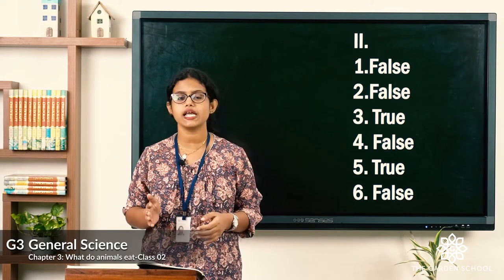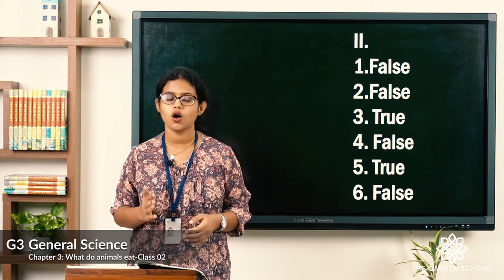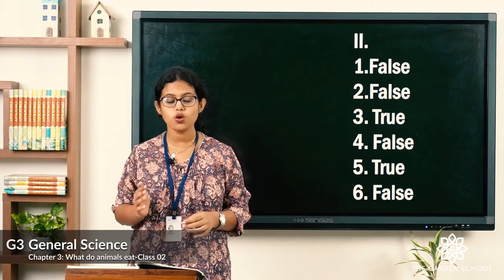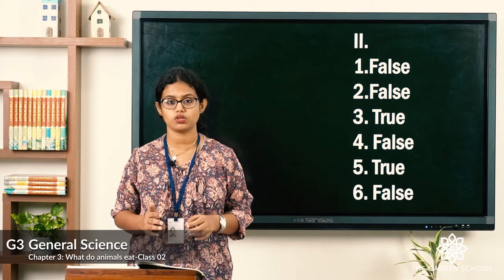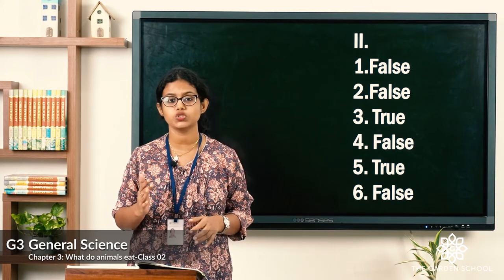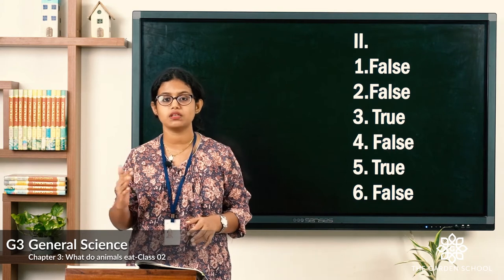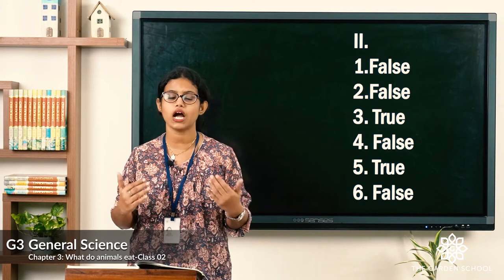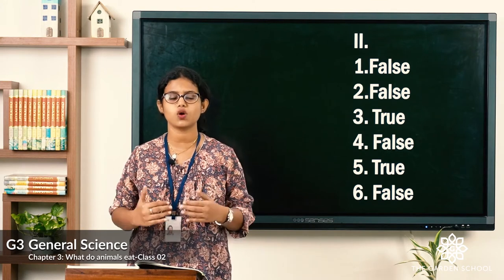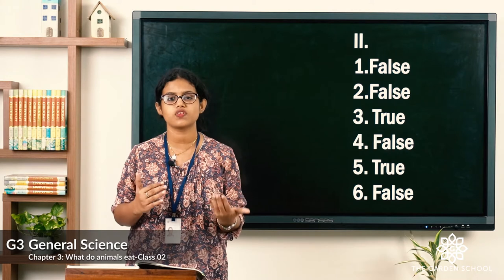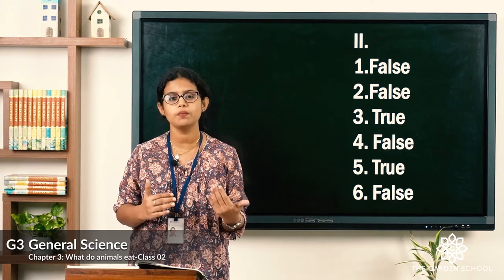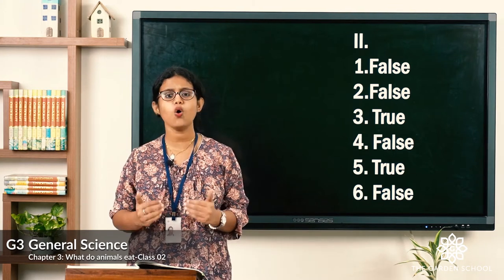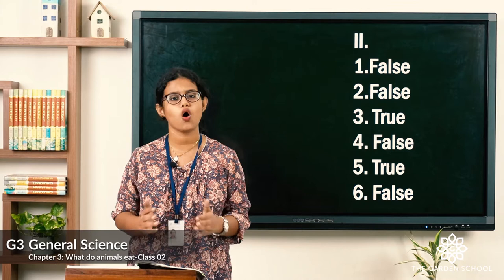Fifth: all snakes are carnivorous — the answer is true. The last one: all wild animals are omnivorous — the answer is false. There are carnivorous animals which eat the flesh of other animals, and even herbivore animals which eat plants. So not all wild animals are omnivores.